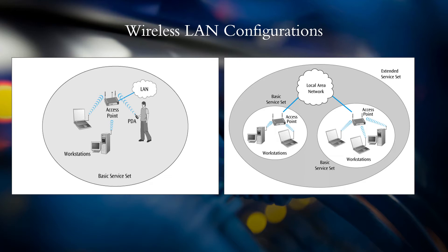The second type of configuration, displayed on the right picture, is the extended service set or ESS. It has a multiple cell layout, such as a cellular network, but at a smaller scale. User devices communicate with the nearest access points, and as they move across cells, they are connected to the nearest access points.